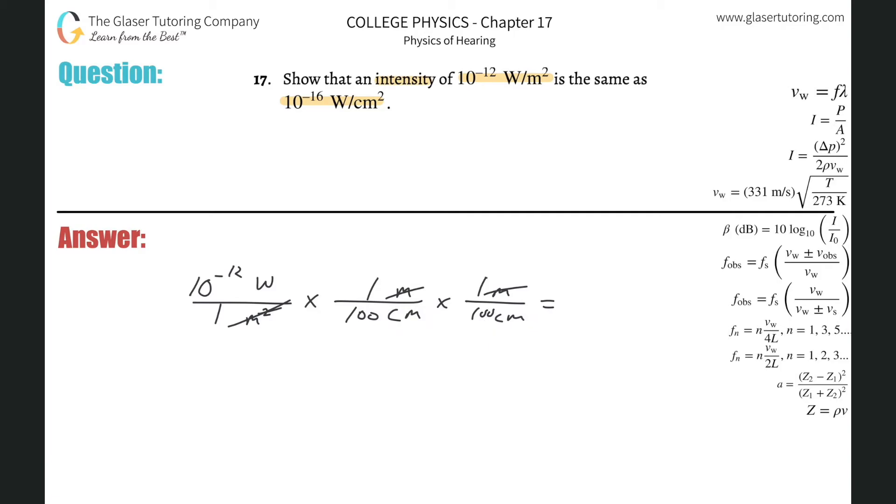All right, so basically plug it into the calculator just to double check. So 10 raised to the negative 12th, and divide that now by parentheses 100 times 100, close those parentheses. And what do you get? 10 raised to the minus 16th, right?